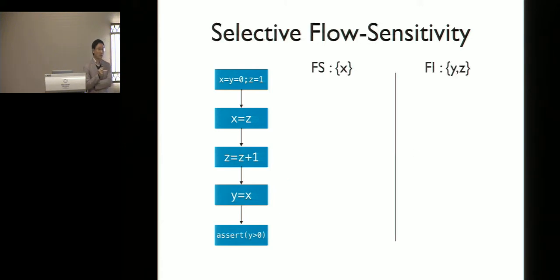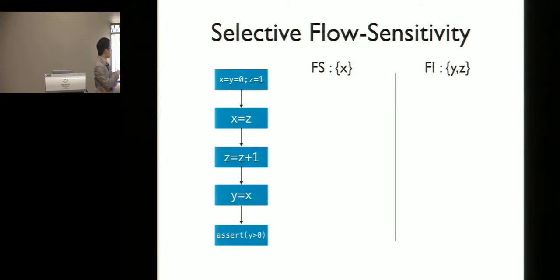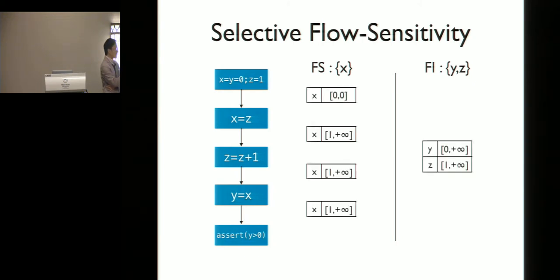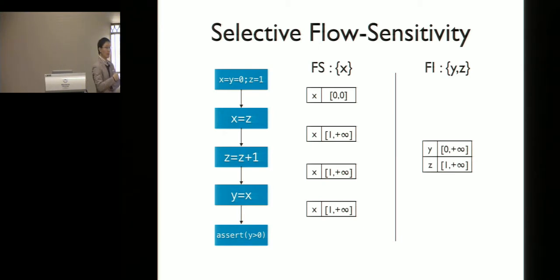Our goal is to strike a balance between flow-sensitive and flow-insensitive analysis by selectively applying flow-sensitivity only to some selected set of program variables. For instance, we apply flow-sensitivity to the single variable X and flow-insensitivity to the remaining variables Y and Z, meaning we keep separate results for X but compute a single result for Y and Z valid over the entire program. This way we can increase analysis precision with a small extra cost.